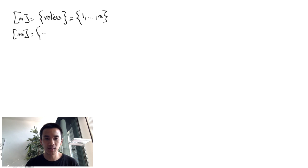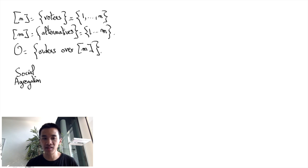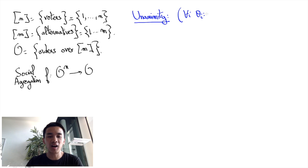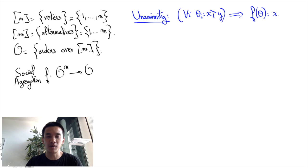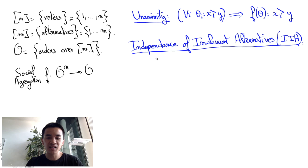Now recall that we considered a set N of voters and a set M of alternatives, and the set O of preferences which are total orders over M. A social aggregation F maps a preference profile theta in O^N to a group preference F of theta. It is unanimous when for all alternatives x and y in M and any preference profile such that theta_i says x is better than y for all voters i in N, then F of theta says that x is better than y.